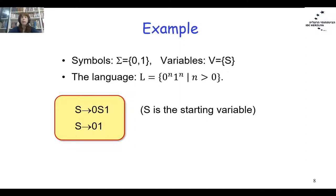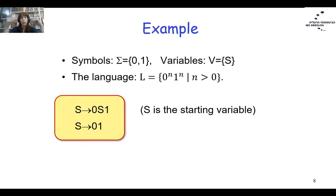Here is an example. The alphabet is {0, 1}, the set of variables has only S. The language L is {0^n 1^n | n > 0}, so the empty word does not belong. The grammar is S → 0S1. For each 0 at the beginning we have 1 at the end. We continue as many times as we like, producing 0^n 1^n. When we want to finish, we replace S with the production 0,1.